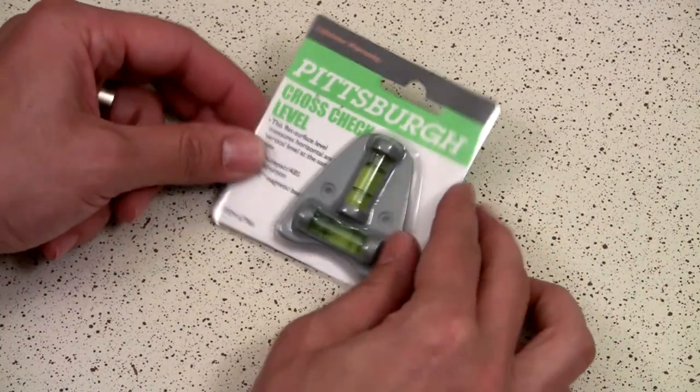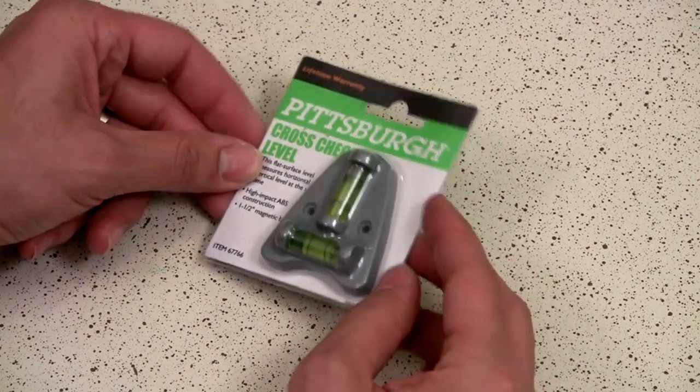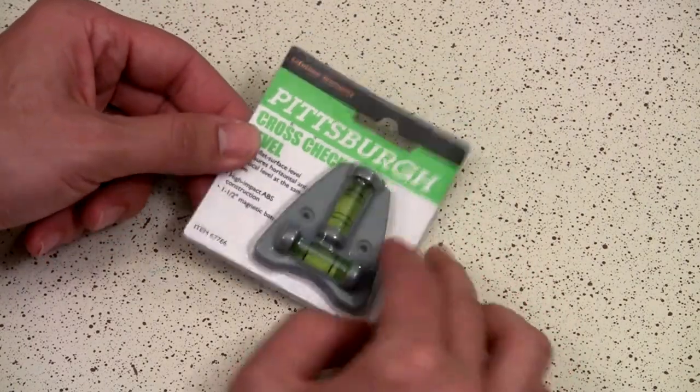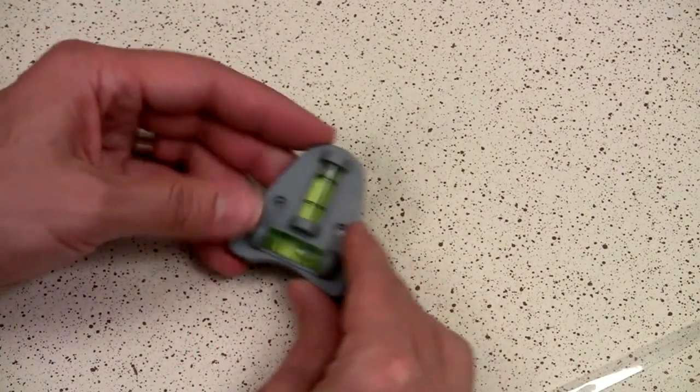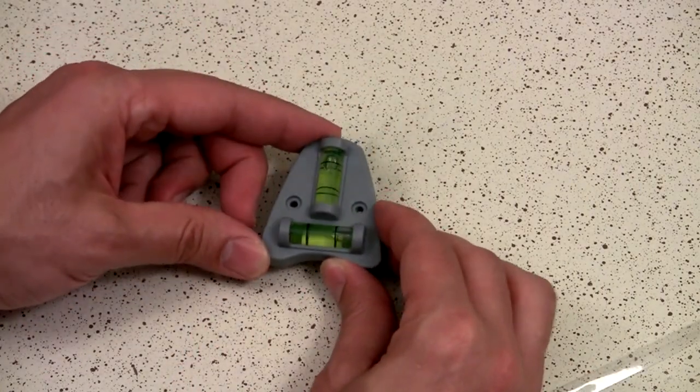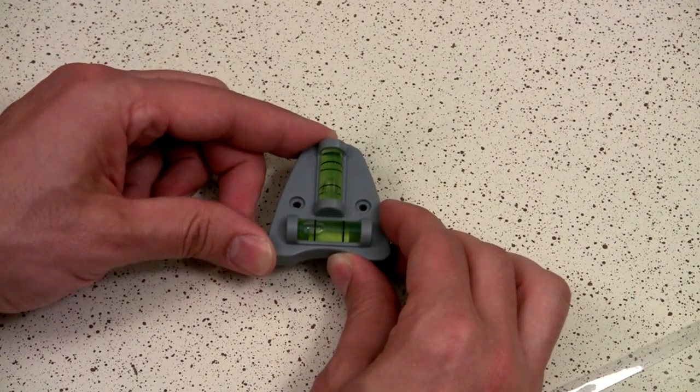Lastly, we've got this cross-check level from Harbor Freight Tools. This was ninety-nine cents, and all this really is is a level with a vertical bubble and a horizontal bubble.